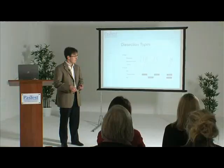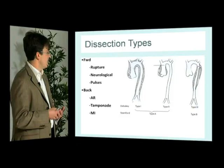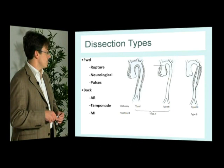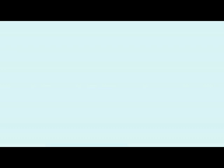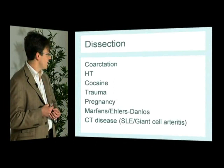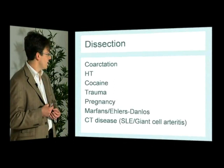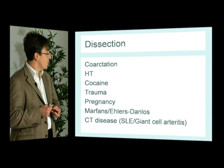Depending on the direction of dissection, presentation varies. Dissection extending forwards can present with rupture, neurological abnormalities or loss of pulses, whereas dissection rupturing backwards can cause valvular abnormalities such as aortic regurgitation, tamponade or myocardial infarction. Dissection is frequently precipitated by elevated blood pressure — itself potentially elevated by cocaine. Congenital abnormalities such as coarctation predispose to it, as do connective tissue conditions such as Marfan's or Ehlers-Danlos syndrome. We must also consider the increased risk in pregnancy and the effects of trauma.